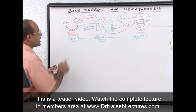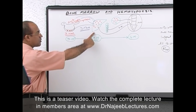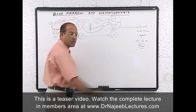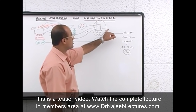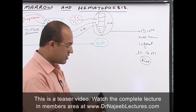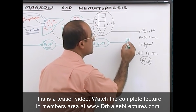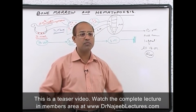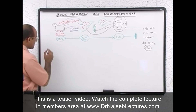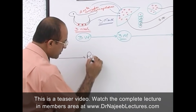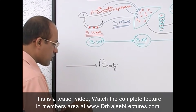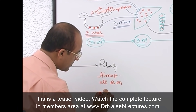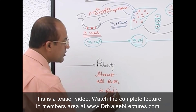To summarize the timeline: yolk sac at 3 weeks; hematopoiesis starts in the liver around 3 months of intrafetal life; hematopoiesis starts in the bone marrow around the 4th month. Both liver and bone marrow keep doing hematopoiesis until just before birth, when the liver stops and hematopoiesis is left only to the bone marrow. In the newborn and up to puberty, almost all bone marrow is red and hematopoietically active.